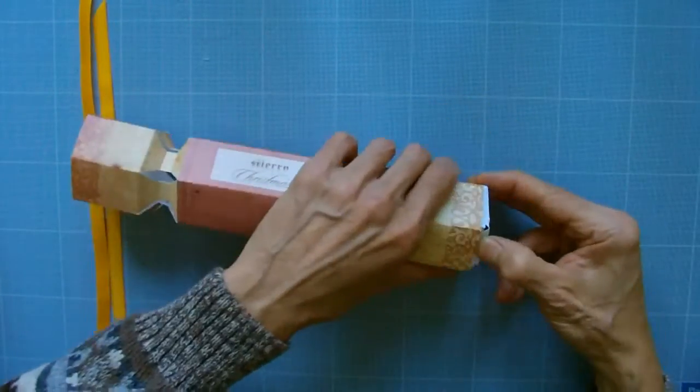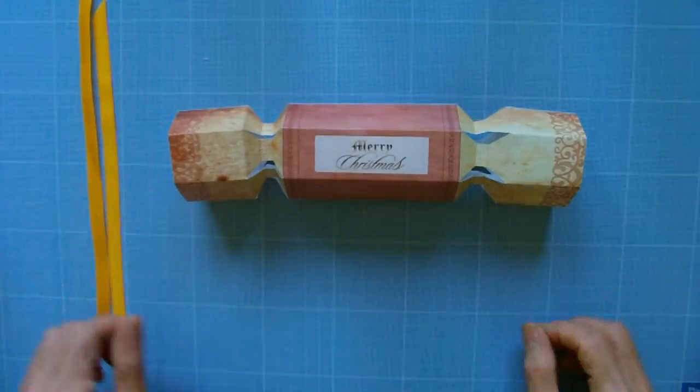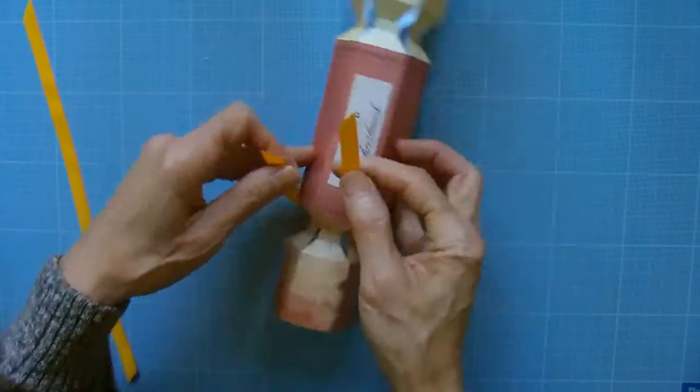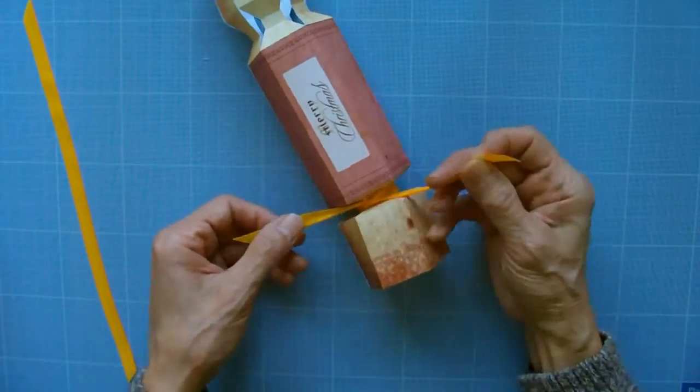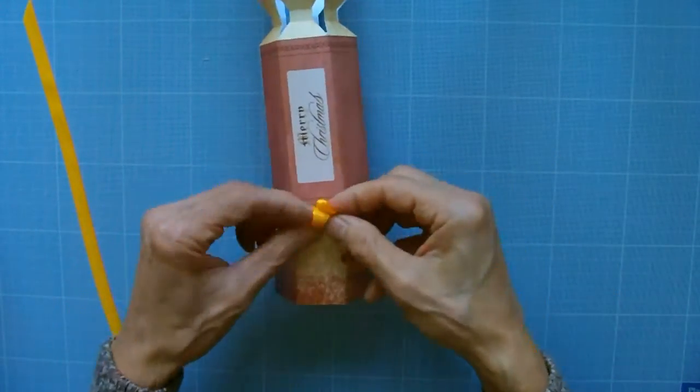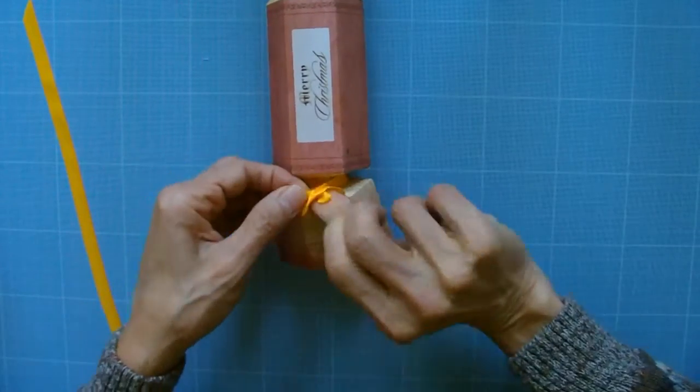Insert inner tube into the middle of the cracker body. Finally tie a little ribbon into a bow on the two ends of the cracker to secure the inner tube.